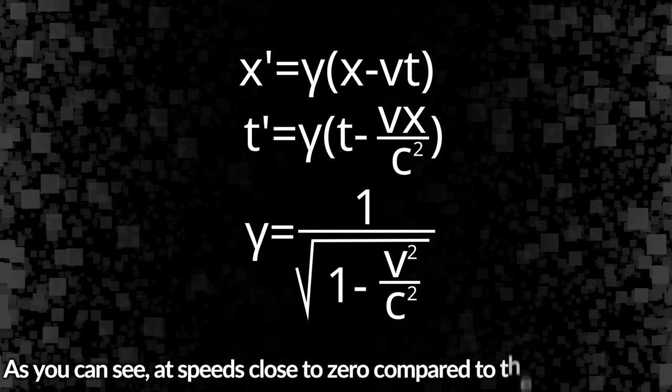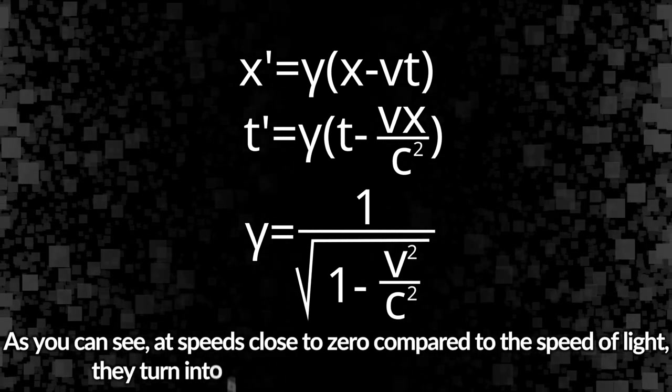They will stack on top of these space-time distortions. Let's dive right into it. Switching between frames of reference is done with so-called Lorentz transformation. As you can see, at speeds close to zero compared to the speed of light, they turn into something simple and familiar to you: Galilean transformation.